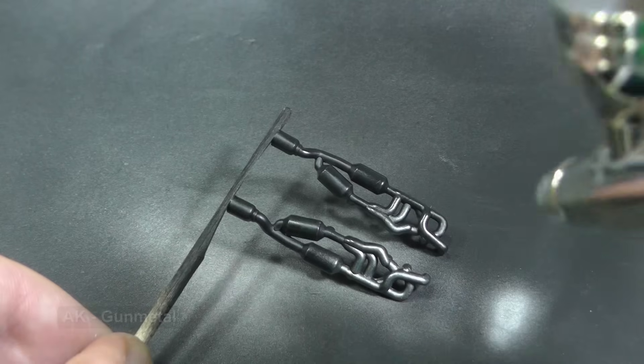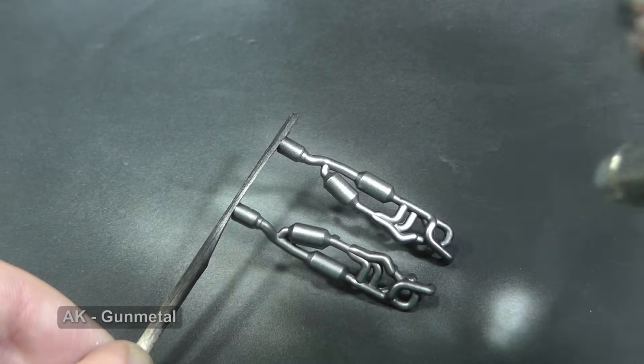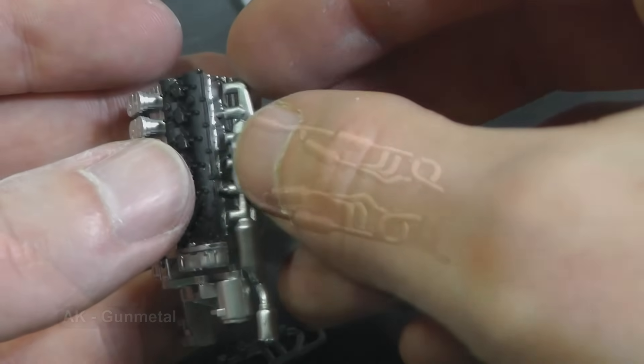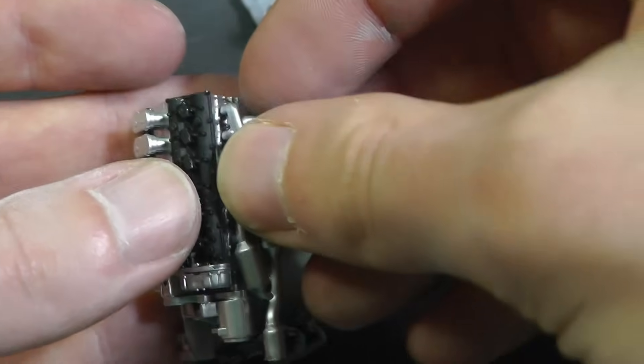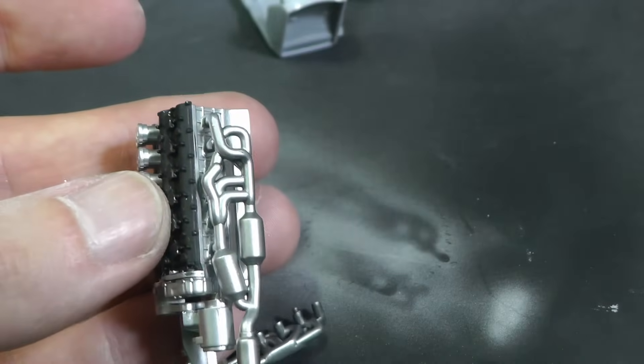And I need steel shade for exhaust pipes. For this purpose I use AK Extreme Metallic Colors. They have an extensive range of metallic shades prediluted for airbrush, so I like them also.